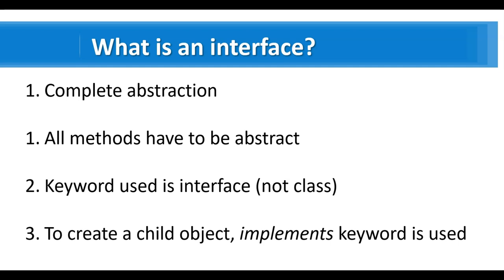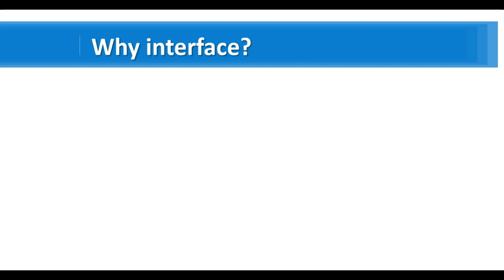When it says complete abstraction, what it means is we already have an abstract class. In an abstract class we use the 'abstract' keyword where the methods are abstracted. So what is an interface and why is it required? Because already an abstract class provides the abstraction that we need — why do we need an interface? Let's look at that.